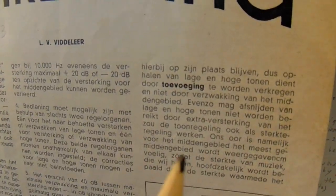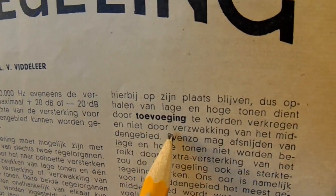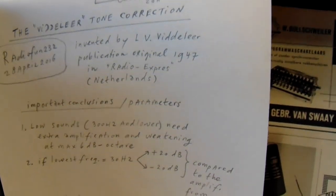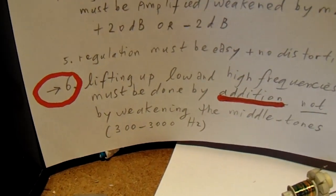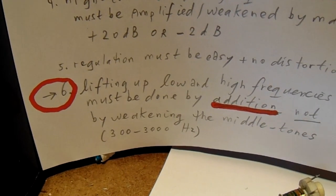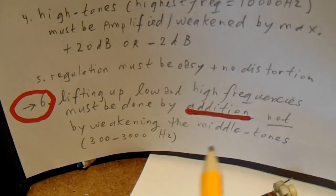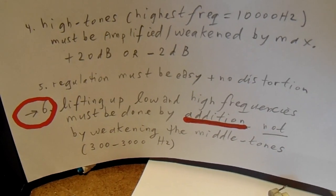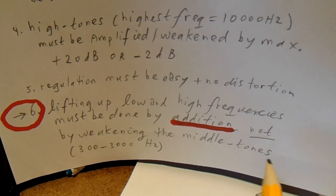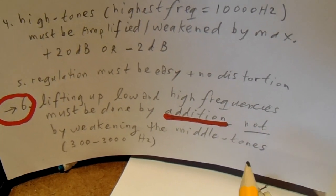So let's start with this conclusion. It's printed in bold. In his schematic, in his view and experiments, lifting up the low and high frequencies in the audio range, say from 30 hertz up to 15 kilohertz, must be done by addition, and not by weakening the middle tones.